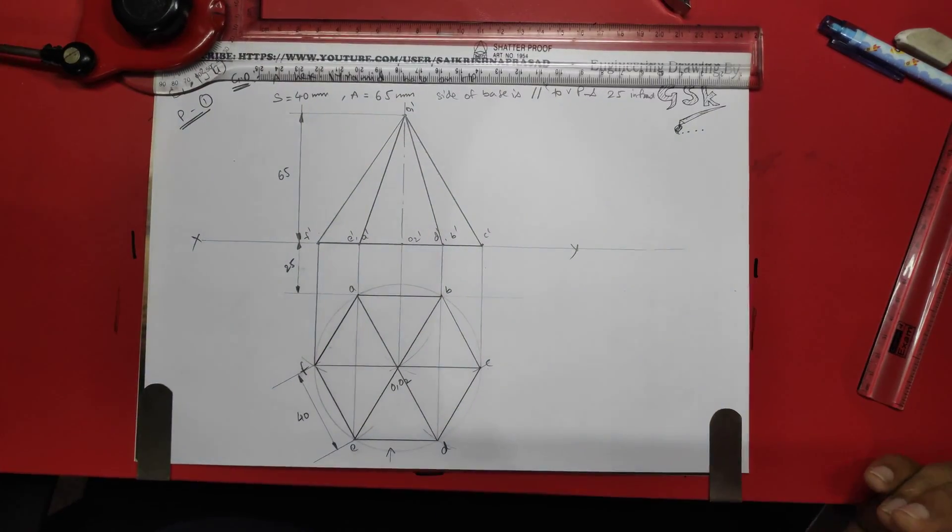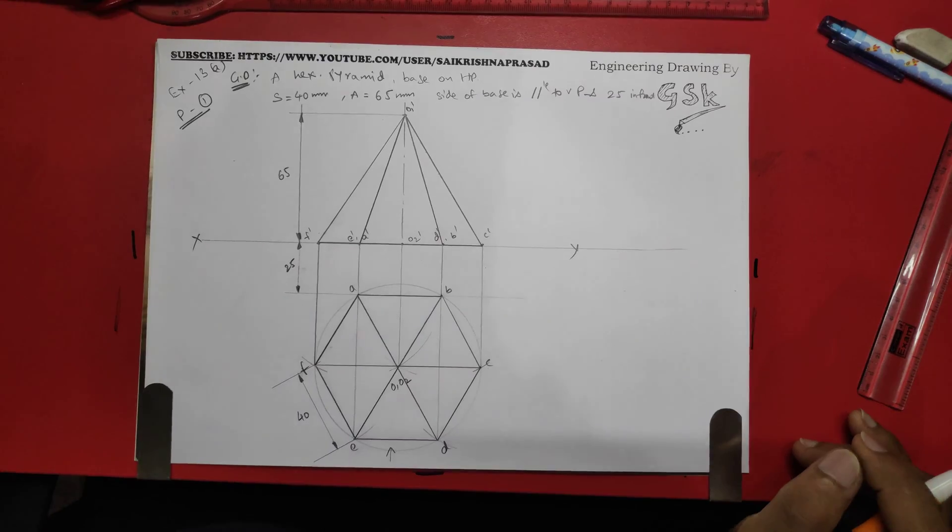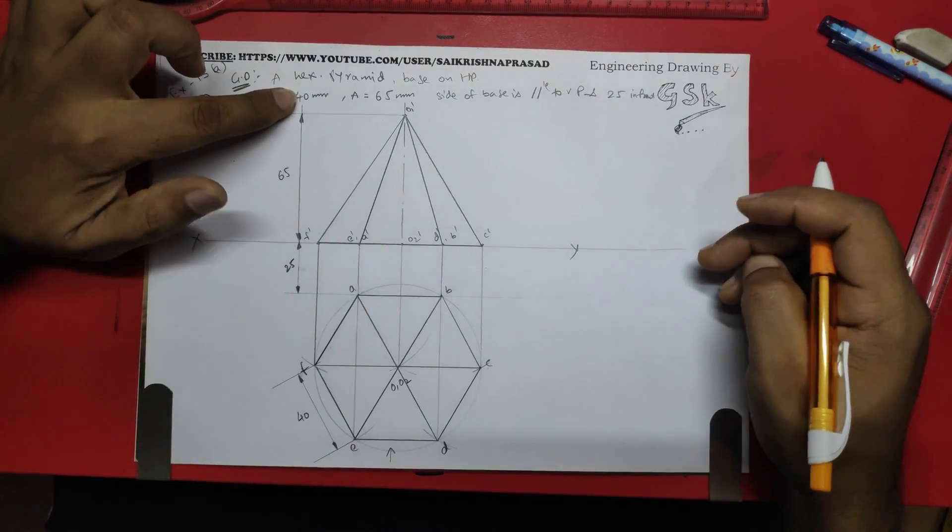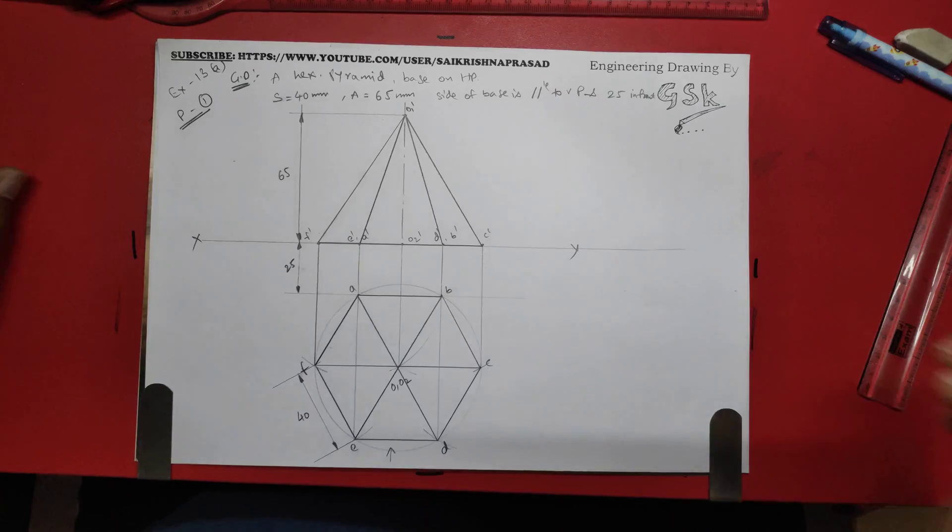And this is the reference line over here. And this is how we draw the orthographic projections of a hexagonal pyramid in these conditions. Thanks for watching.